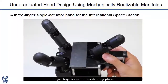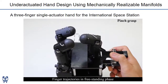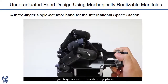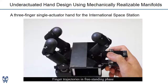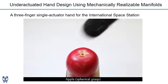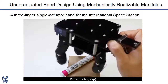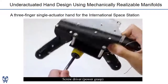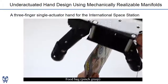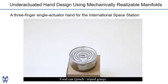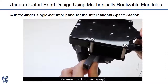This video shows the performance of the hand prototype. With one actuator, this hand can create a spherical grasp, a pinch grasp, and a power grasp. It can successfully grasp a variety of objects, including fruits with spherical grasps, pans with pinch grasps, screwdrivers with power grasps, food bags with pinch grasps, food cans with tripod grasps, vacuum nozzles with power grasps, and so on.